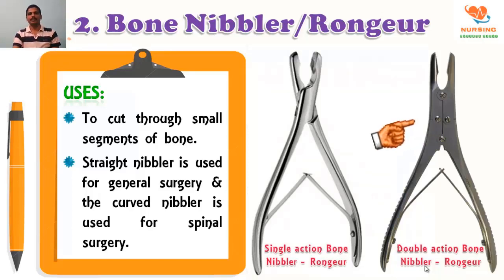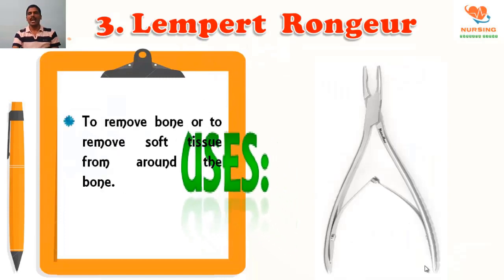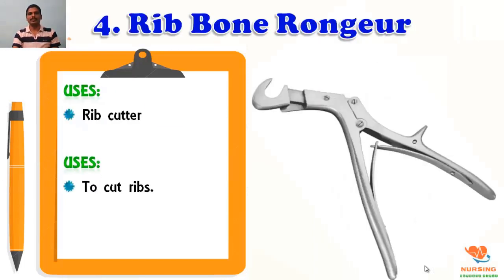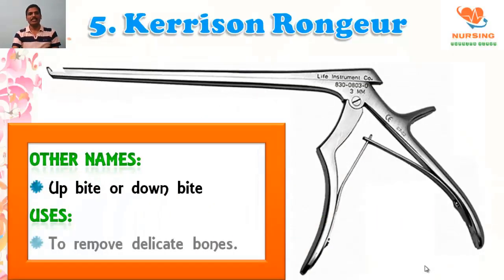There are two types: single action bone rongeur and double action bone rongeur. Lemppert rongeur is used to remove bones or to remove the soft tissue from around the bone area. Rib bone rongeur, or rib cutter, is used to cut the rib bones. Kerrison rongeur — other names are up-bite or down-bite — used to remove the delicate bones.